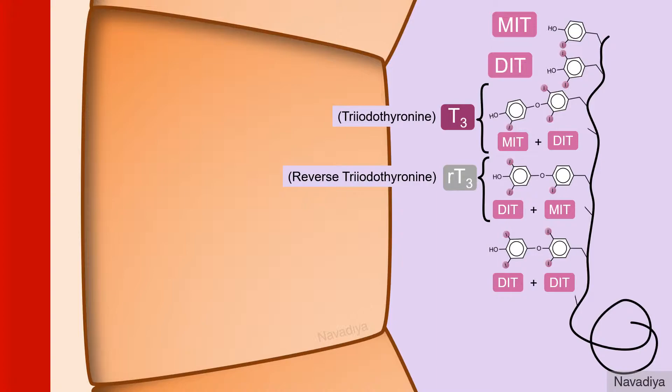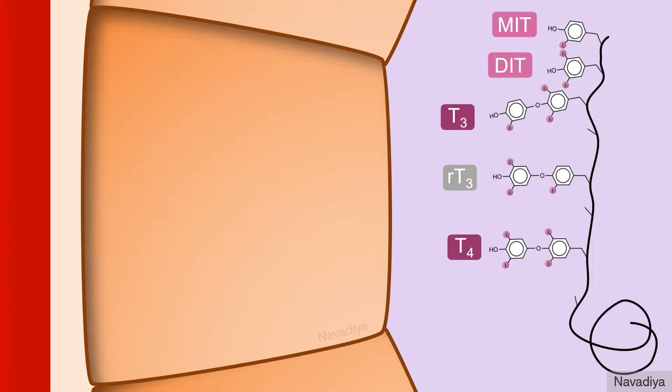Now if two diiodotyrosines combine it forms tetraiodothyronine or T4. Quantitatively much more T4 is synthesized than T3. The hormones thus synthesized are stored in colloid as part of thyroglobulin.